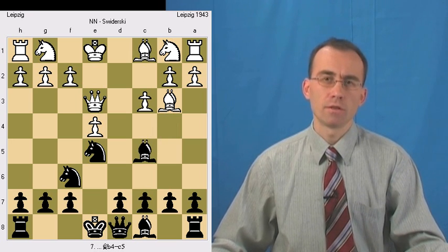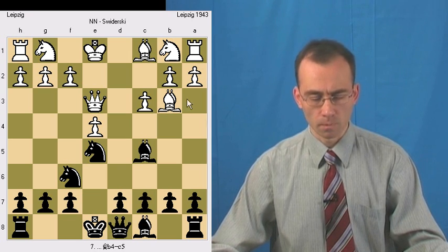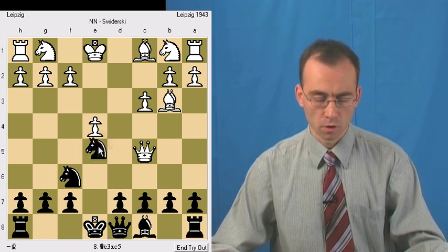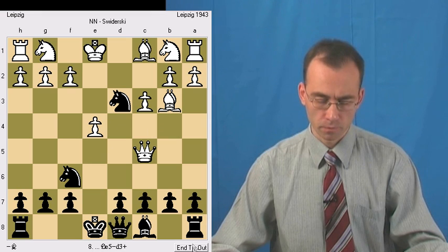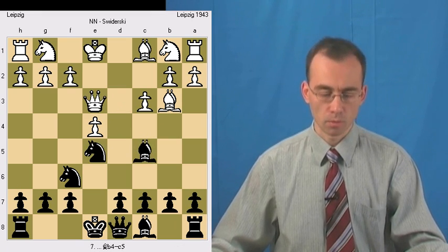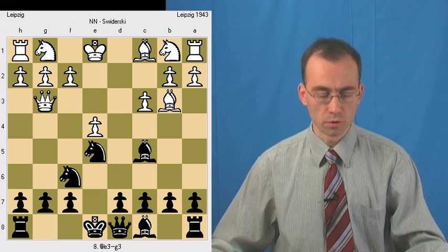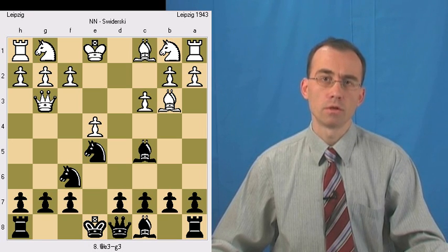So here it's similar to what we already considered. Here White's queen cannot take this bishop because Nd3 fork. So White has to move its queen. And White moves queen to g3. And you can pause this video to think why this move was a mistake.